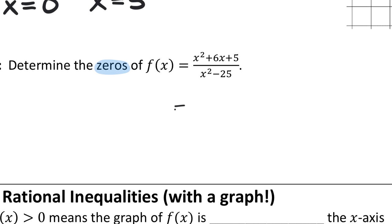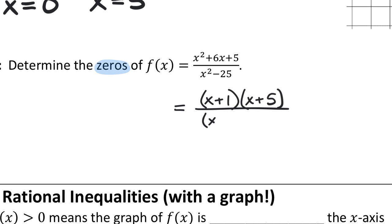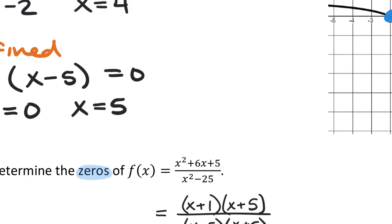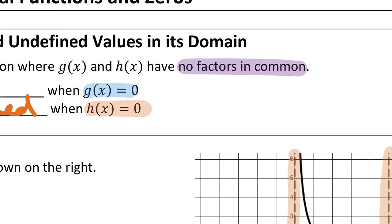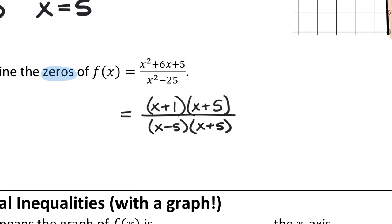Factoring the numerator gives (x+1)(x+5), since 5×1=5 and 5+1=6. The denominator factors as (x-5)(x+5) — the difference of two squares. Notice that (x+5) is a factor in common on both top and bottom. Since our definition requires no factors in common, we must cancel those out. Those common factors are not going to be zeros for this function.